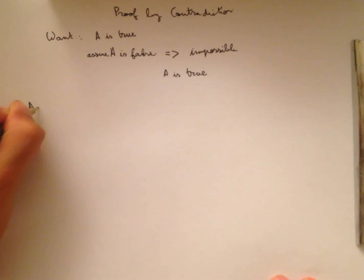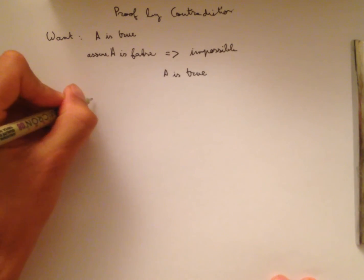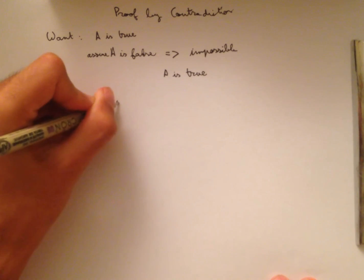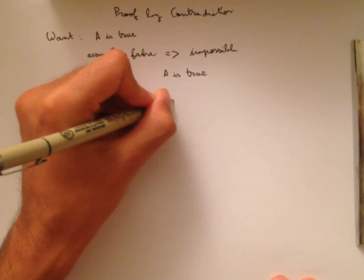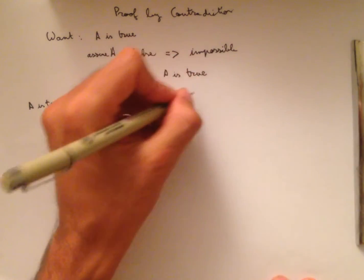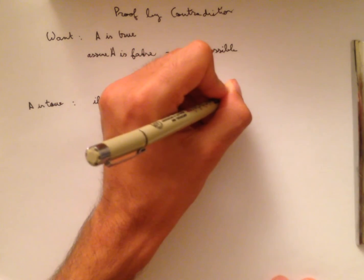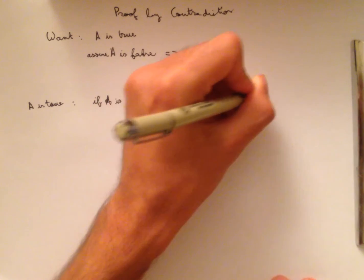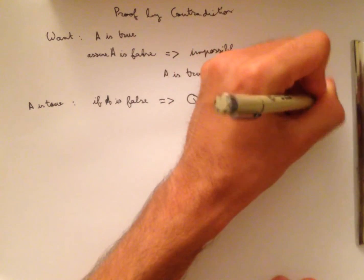So to summarize, if we want that A is true, it suffices to show that if A is false, then that implies that there is a Q such that Q is true and Q is false.